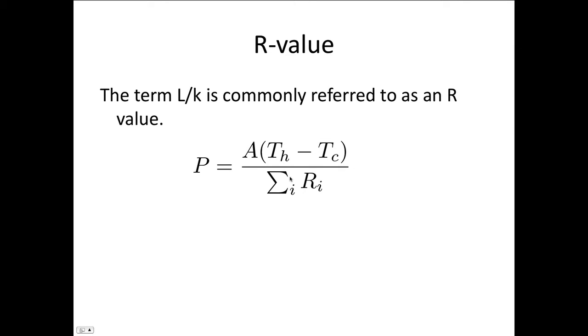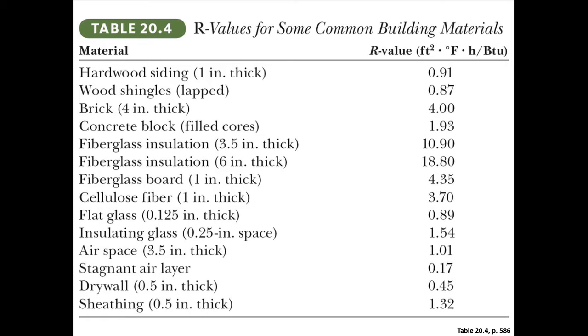So this just says that if you have a composite material, to get the total R-value, you just need to add the R values from each part. This table presents the R values for some substances that are commonly used in building.